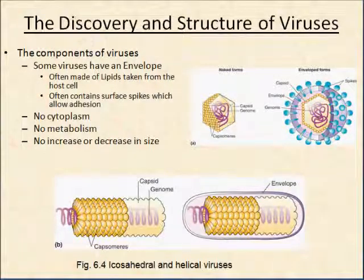Some viruses also have an envelope — when they leave the host cell, they take some of the cell membrane with them. It contains surface spikes that allow entry into the cell, and it contains a lipid coat which can allow it to bind to its target cells much more easily. Viruses do not have any cytoplasm, so they don't have any cytoplasmic organelles, no metabolic processes. They do not increase or decrease in size. They cannot replicate by themselves.